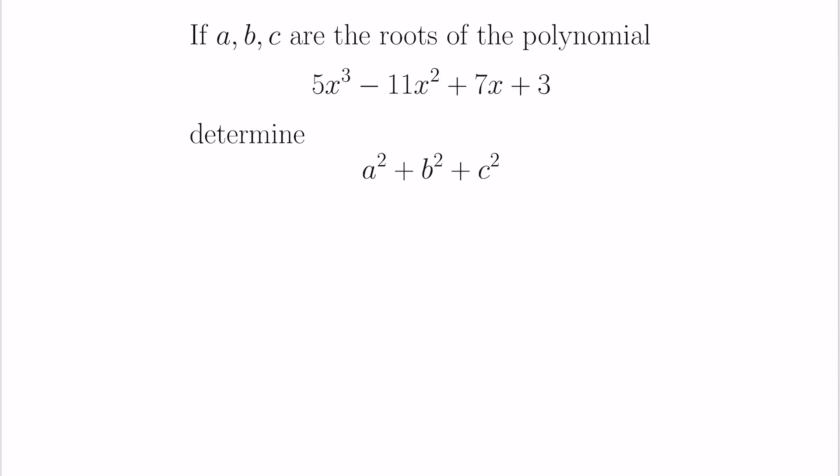And Vieta's formula is going to help us to do this. So the roots are the solutions to the equation that's obtained by setting this equal to 0. Now in Vieta's formula we typically don't have this constant term here so let's divide throughout and rewrite the polynomial equation as x cubed minus 11 fifths x squared plus 7 fifths x plus 3 fifths equals zero.